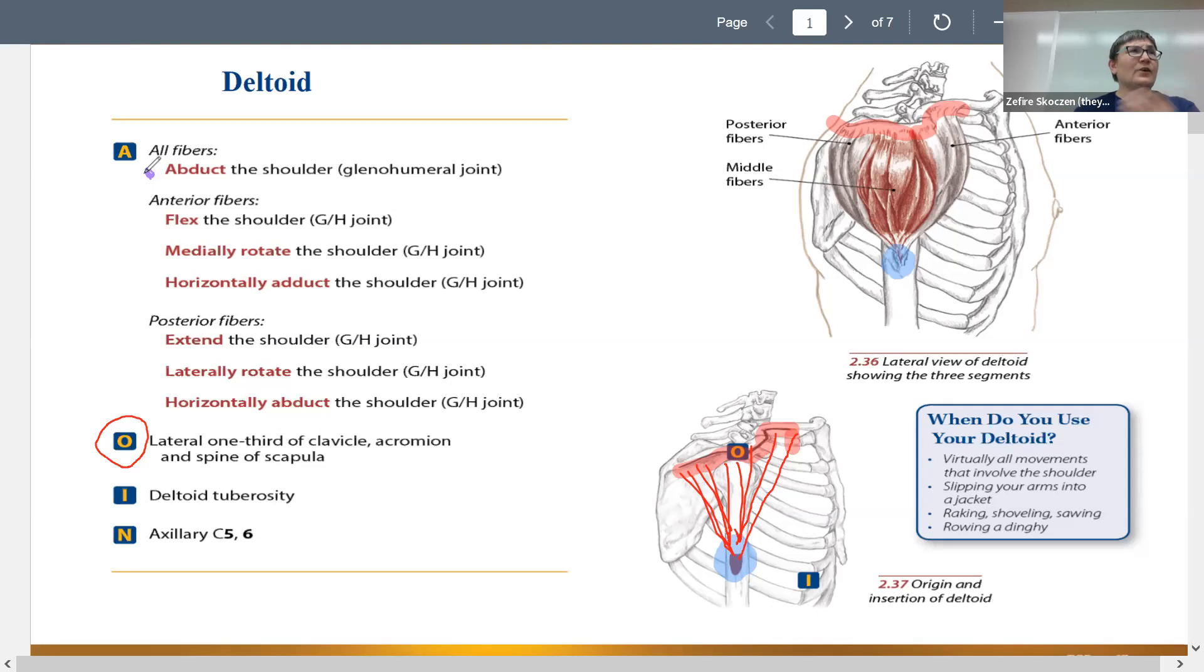So our abduction, go ahead and abduct the shoulder, glenohumeral joint. And then we're going to flex the shoulder. And we're going to medially rotate the shoulder. Horizontally adduct. This feels like it should be a dance. So that's all the anterior fibers, front fibers. And then the back fibers, we can extend the shoulder, laterally rotate the shoulder and horizontally abduct the shoulder. And all of them can abduct.